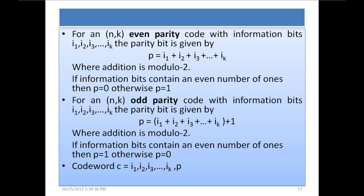For an (n, k) code, n is the length of the codeword and k is the number of information bits. For even parity code with information bits i1, i2, i3, ..., ik, the parity bit is given by p = i1 ⊕ i2 ⊕ i3 ⊕ ... ⊕ ik, where addition is modulo 2. If information bits contain an even number of ones, then p = 0, otherwise p = 1. For even parity, we simply add the information bits using modulo 2 addition and whatever the result is, it is added as the parity bit.